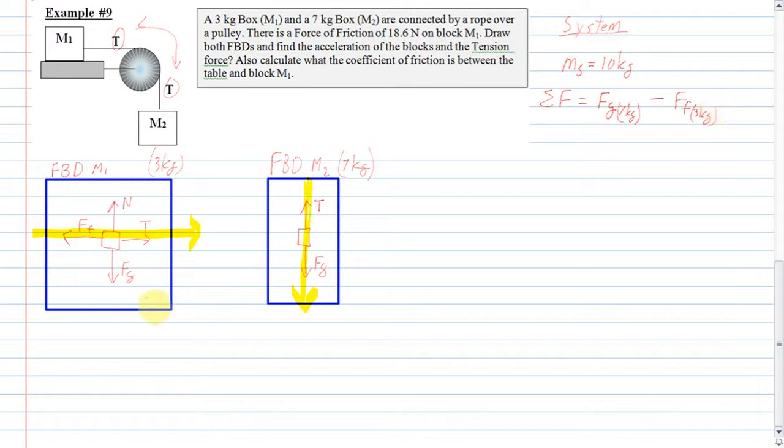So, I will do that right here. The force of friction here is, on this object, is 18.6 newtons. And the force of gravity of this guy is Mg, which is 7 times 9.8. What's 7 times 9.8? 68.6? Thank you. So, that means the sum of the forces is 68.6 newtons subtract 18.6 newtons.